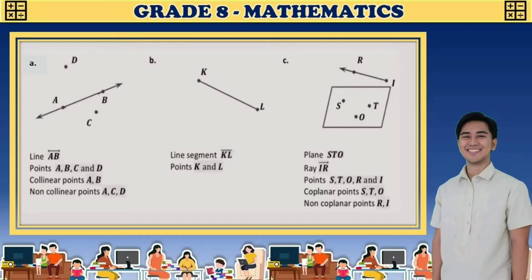In letter B, we have line segment KL, which has two endpoints: point K and point L. The difference between a line and a segment is that a line extends infinitely in both directions, while a line segment has endpoints.